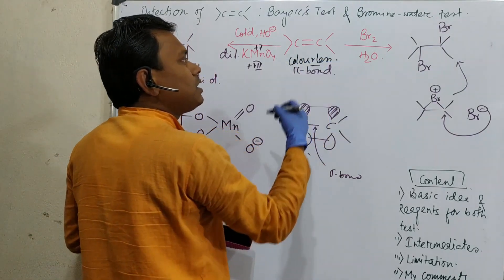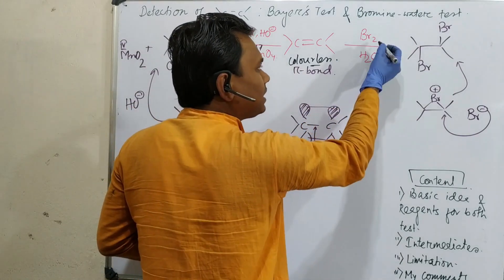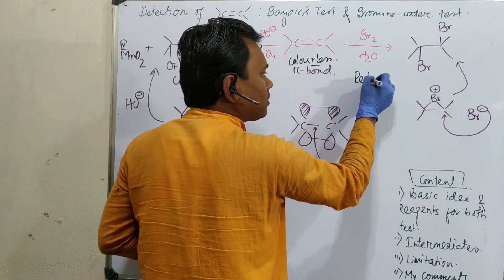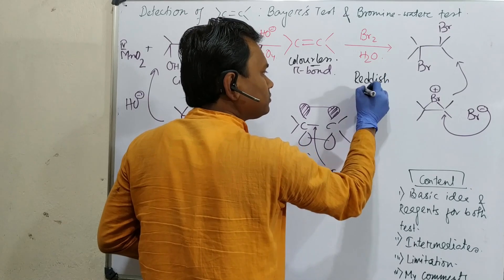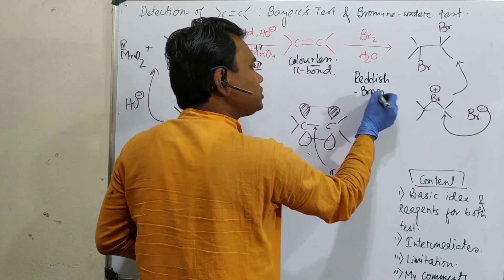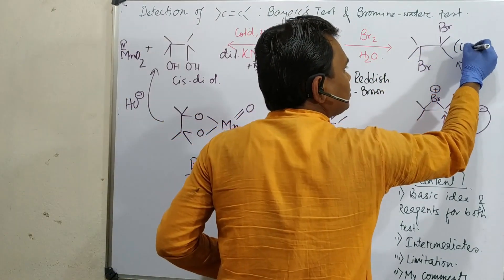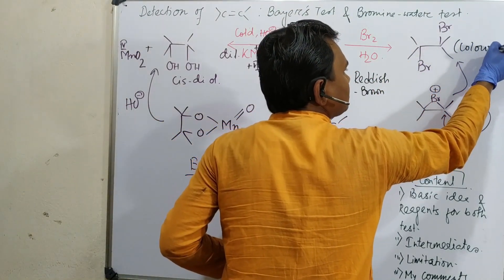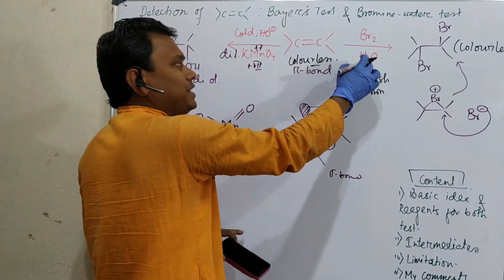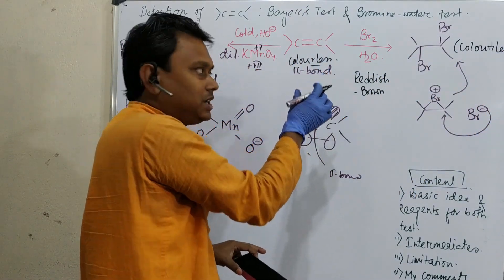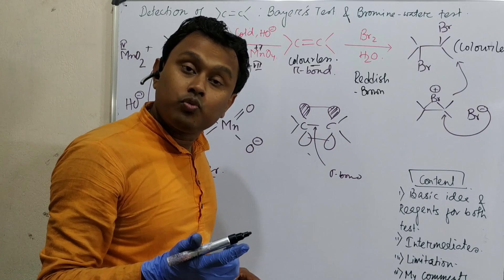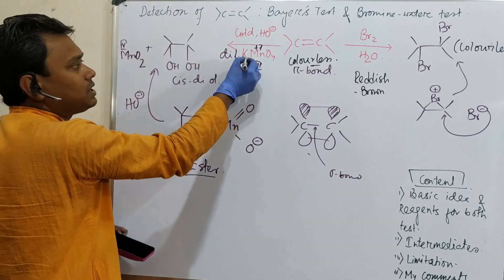What is the visual change actually happening? Alkene is generally colorless. Bromine water, if you check its color, is reddish brown. The final product is also colorless. So what do I mean? If you mix a reddish brown solution with a colorless material and ultimately get colorless, that's the proof.